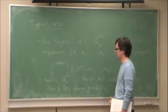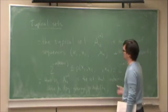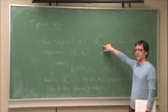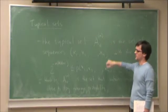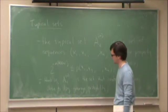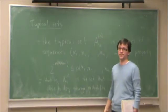In other words, if we propose a source code that encodes only elements of the typical set and ignores everything outside of the typical set, we can have a source code that succeeds with arbitrarily high probability and we will show can encode things with average length N times h of X.